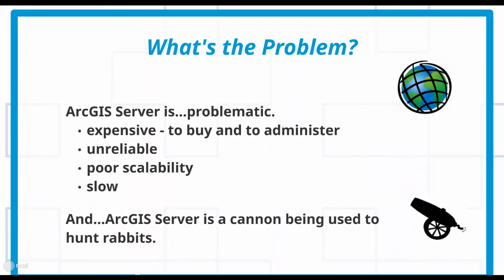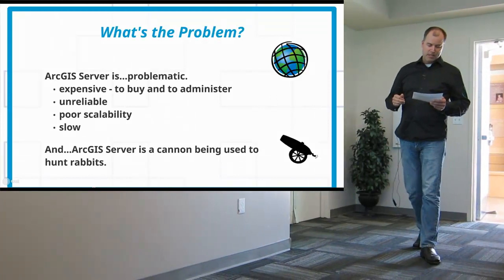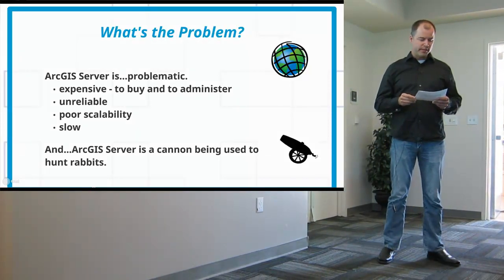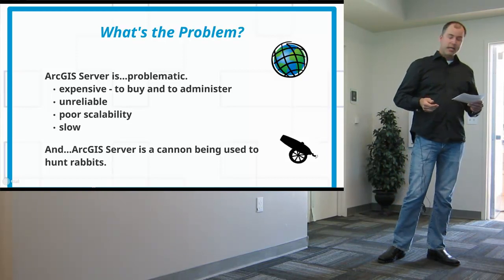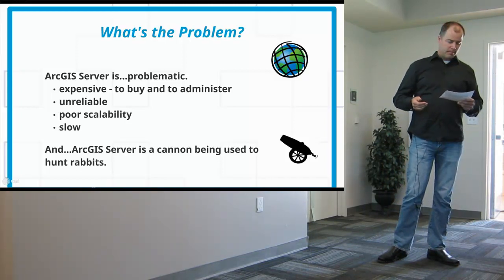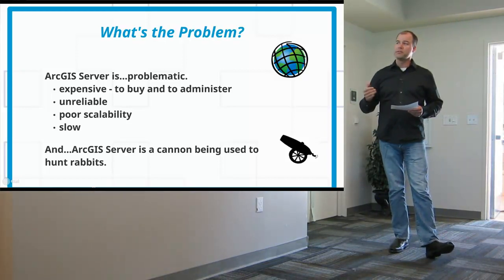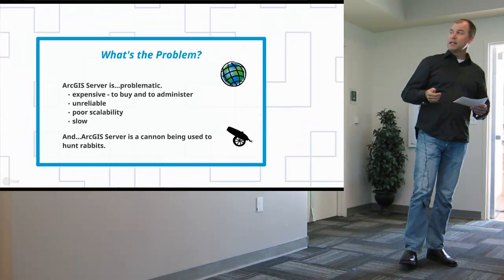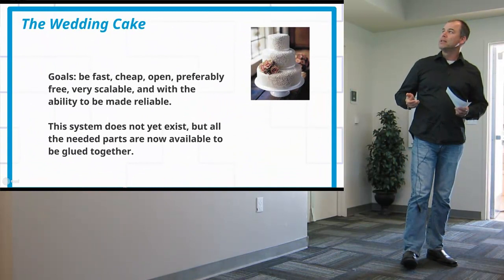So what's the problem with that architecture? ArcGIS Server is the problem. It's expensive both to buy and maintain. Quality is low, so reliability of the system suffers. It has poor scalability and it's slow, especially for the all-important reprojection operations. And its many features often make it vast overkill for what we need.